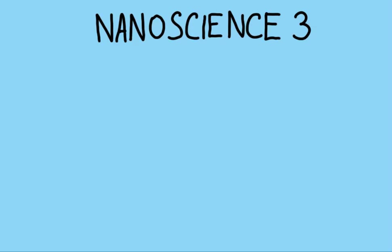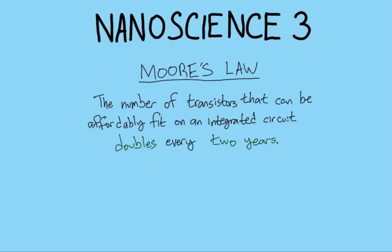Hey guys, this is Ethan. Welcome to your third tutorial on nanoscience. Today we're going to be talking about Moore's Law. Moore's Law states that the number of transistors that can be affordably fit on an integrated circuit doubles every two years.